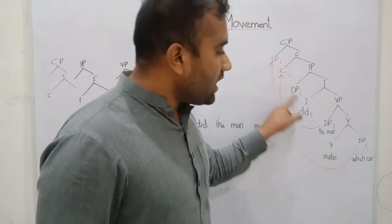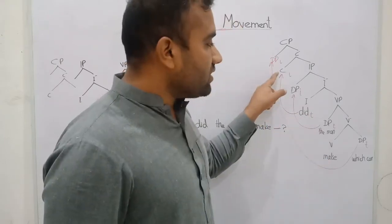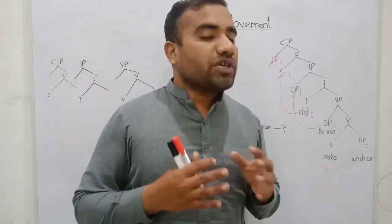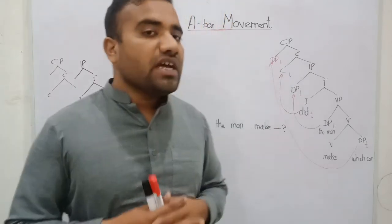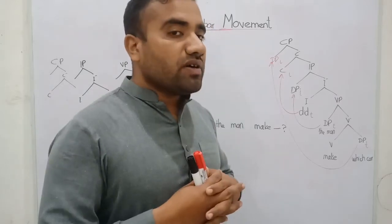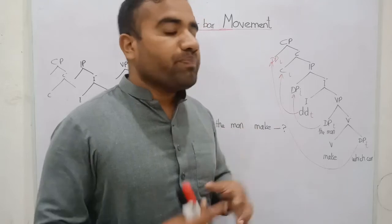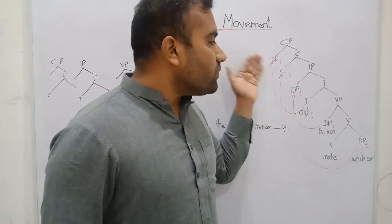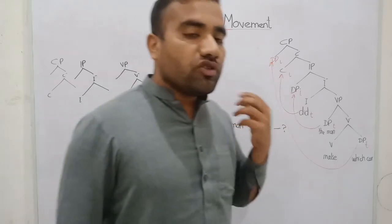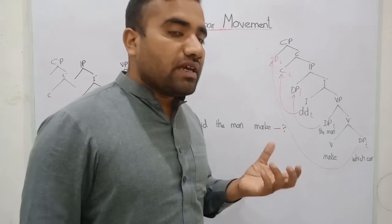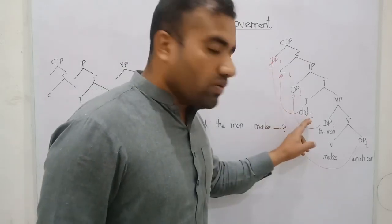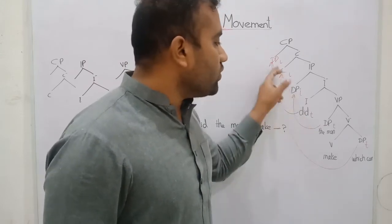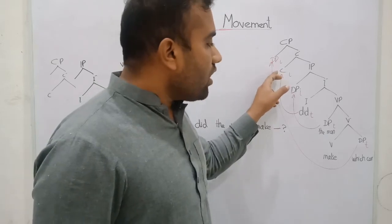In this diagram we also have the C head position. C has two features: the Q feature and the EPP feature, and C is strong. A strong C triggers the lower head — it takes the lower head at its head position. When we want to construct an interrogative sentence, C triggers the lower I head and takes it at the C head position. This is called head-to-head movement.